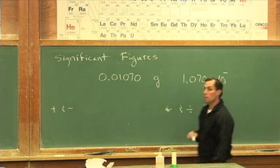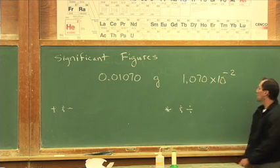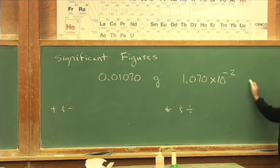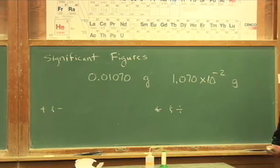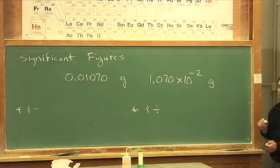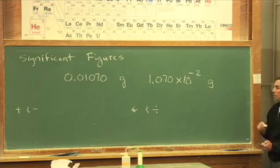I need to still include my units of grams, and the zeros on the left have disappeared. We call them placeholders. They're not significant.